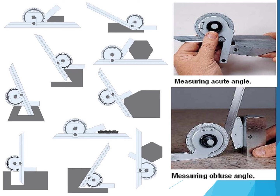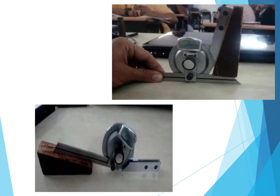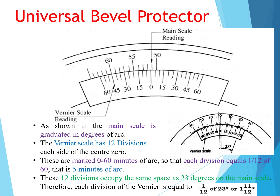You can find out acute angles as well as obtuse angles by moving the adjustable blade. The vernier scale has 12 divisions, marked from 0 to 60 minutes of arc, so that each division equals one-twelfth of 60, which is 5 minutes of arc. The 12 vernier divisions occupy a space of 23 degrees on the main scale, so each vernier division equals 1/12 of 23 degrees, which is approximately 1 degree 55 minutes.